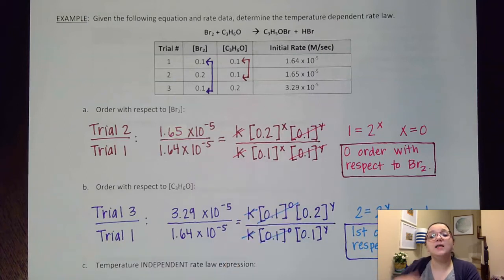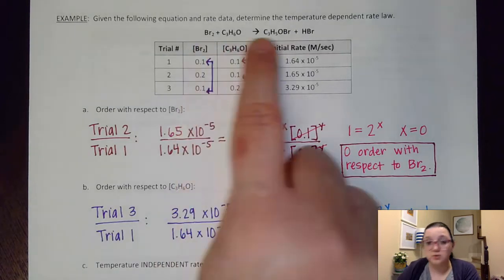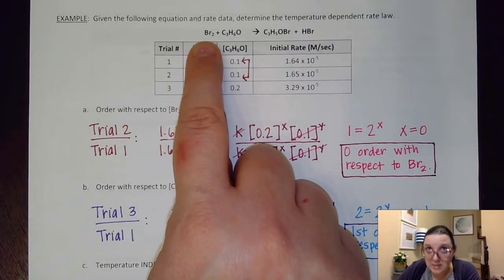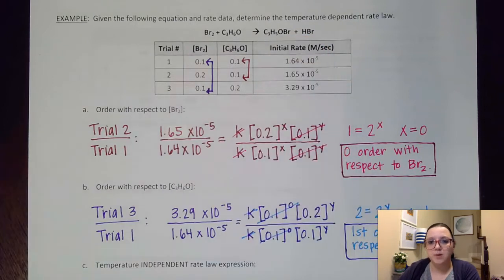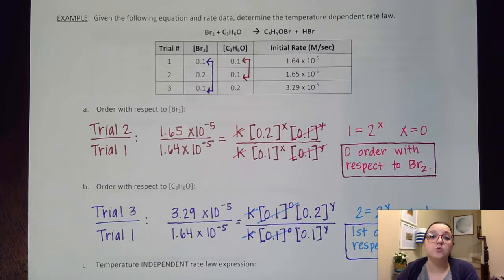So what that means is that even though Br2 is important to this reaction stoichiometrically, I need Br2 in order to produce my product, I don't actually change the rate of this when I change the concentration of Br2. Changing the concentration of Br2 doesn't make the reaction go any faster or slower than it did previously. What that probably means on our mechanism is that Br2 was not involved in the slow step. And so that's why we see it as an order of 0 because it doesn't affect the overall rate of this reaction.